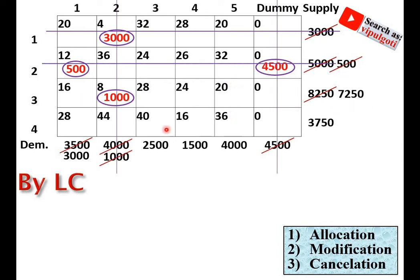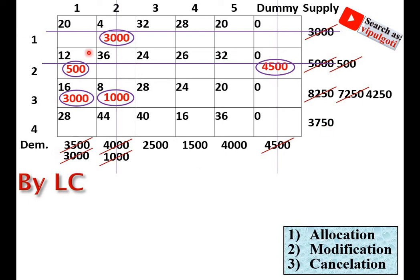Select the minimum cost once again — there is a tie, so prefer the cell with maximum allocation. Allocating to one cell gives 3,000 while the other gives only 1,500. The cell with the maximum allocation of 3,000 is preferred. So 3,000 is allocated there, and both supply and demand are modified and cancelled.